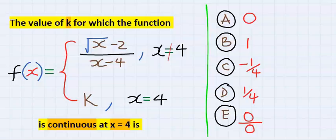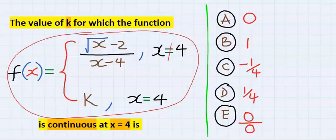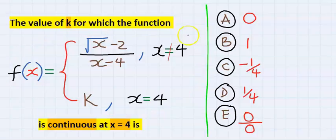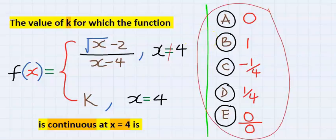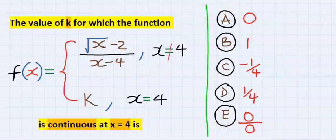The value of k for which this function is continuous at x equal to 4. We are going to choose from one of these options to solve this problem. Let's understand the question.